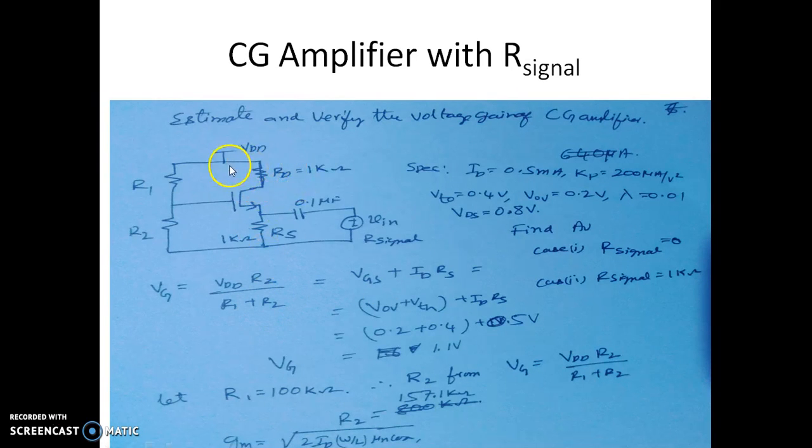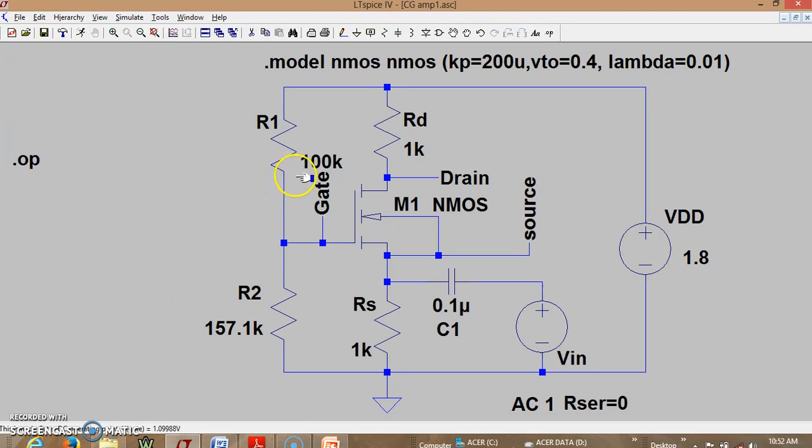So we shall go to LTSpice and try to see this circuit of CG amplifier rigged up on LTSpice. You can see R1 R2 will provide a gate voltage of 1.1 volt which will have a drop of 0.5 volt across RS and remaining 0.6 happens to be Vgs and this is Rd of 1 kilo ohm.